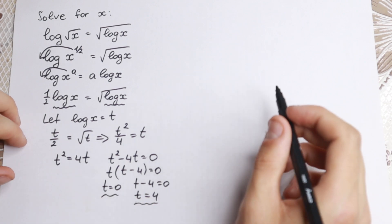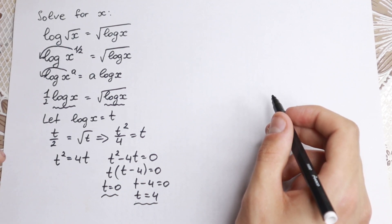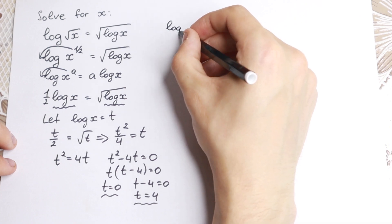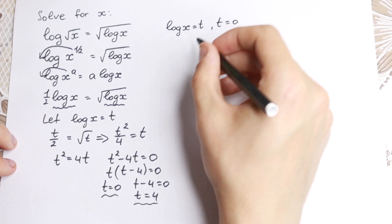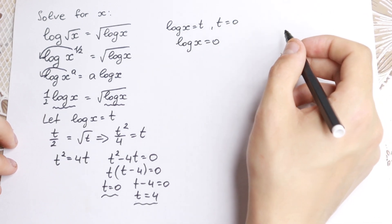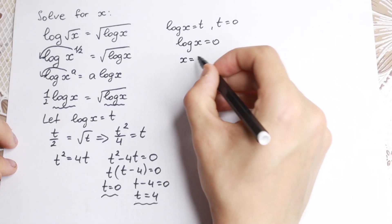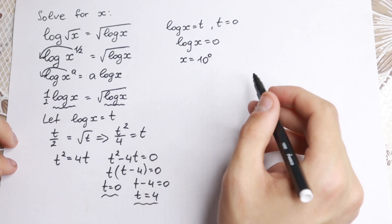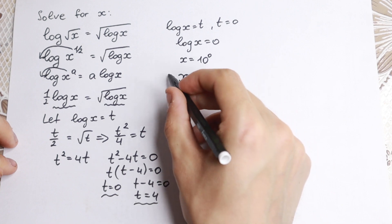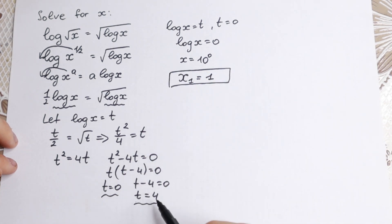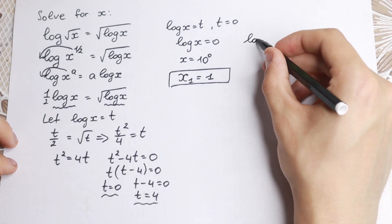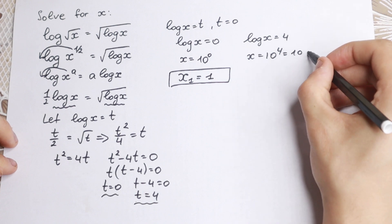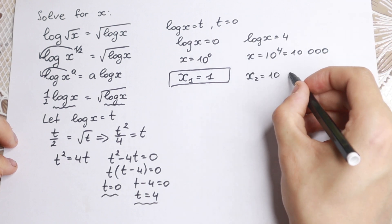Now we go back to the substitution logarithm x equals t. For the first root, logarithm x equals 0, so x equals 10 to the power 0, giving us x₁ equals 1. For the second root, logarithm x equals 4, so x equals 10 to the fourth power, giving us x₂ equals 10,000. These are our two roots.